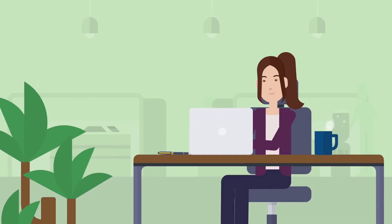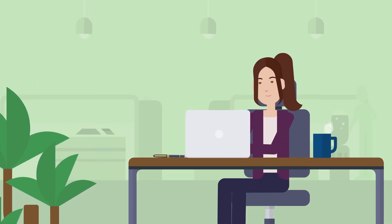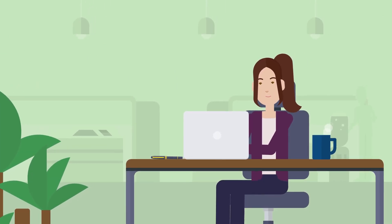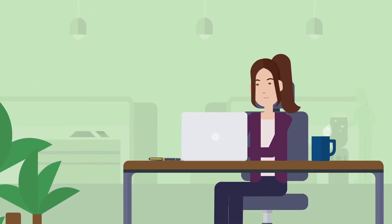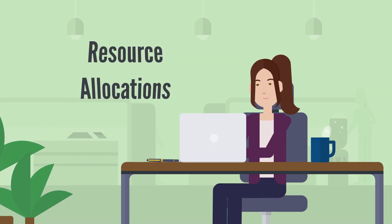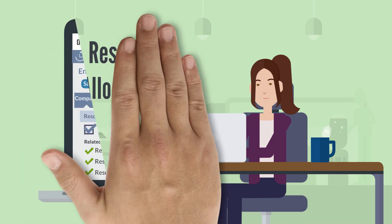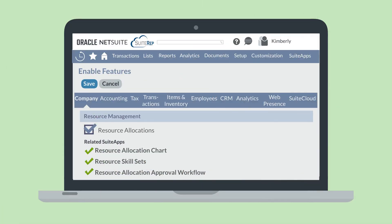If you need a simple way to track your employee resources and assign them to various projects and project tasks, you'll want to use the NetSuite Resource Allocations feature. You can enable the Resource Allocations feature in the Resource Management section of the Company tab under Enable Features.